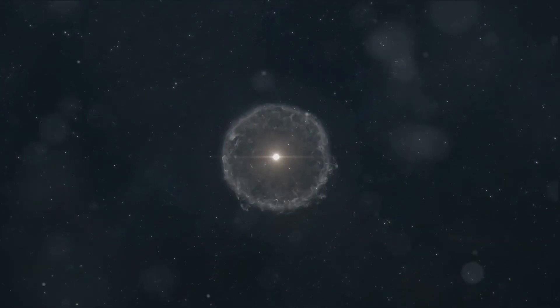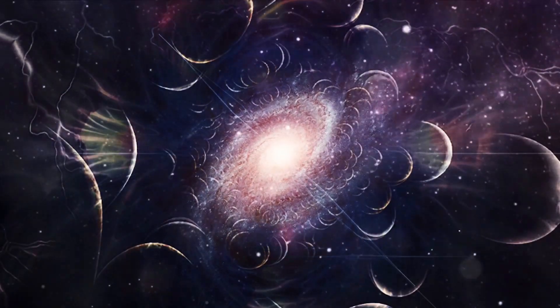The planets, on the other hand, formed from the materials of the nebula that were not pulled into the sun. The spinning motion of the dust and gas created a flat spinning ring disk called an accretion disk.